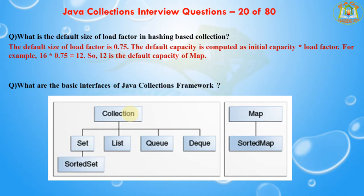The next question is: what is the default size of the load factor in hashing-based collections? The default size of the load factor is 0.75. The default capacity is computed as the initial capacity multiplied by the load factor — for example, 16 into 0.75 equals 12, so 12 is the default capacity of a Map. The initial capacity of a Map is 16 and 0.75 is the default load factor.